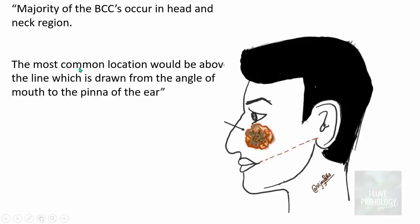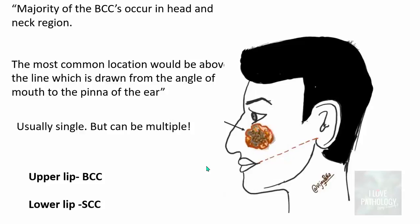The majority of basal cell carcinomas occur in the head and neck region. The most common location is above the line drawn from the angle of the mouth to the pinna of the ear. A useful tip: whenever you find a nodule on the upper lip, consider basal cell carcinoma as a differential diagnosis, whereas nodulo-ulcerative lesions on the lower lip are more likely squamous cell carcinomas.